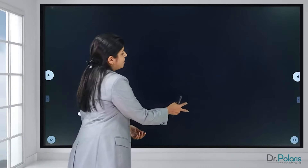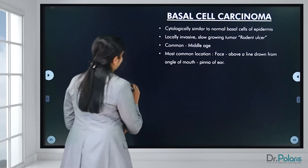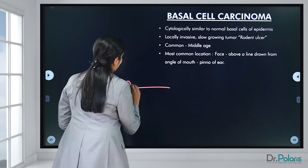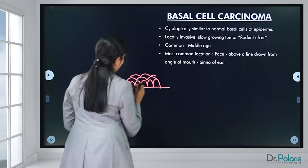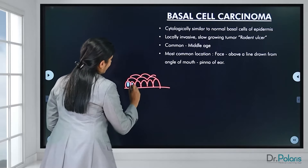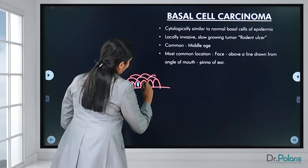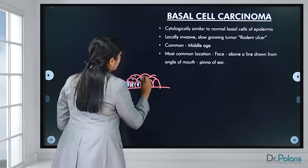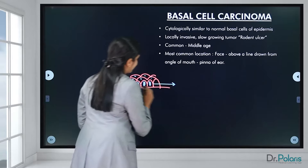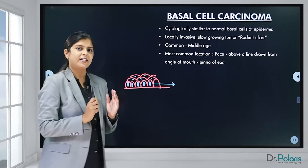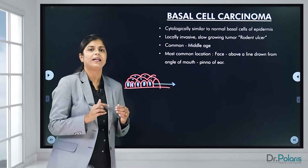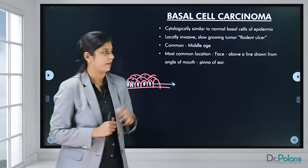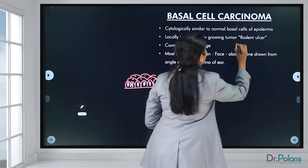Now let's talk about basal cell carcinomas. Cytologically these resemble the basal layer of the epidermis — the nuclei are more hyperchromatic, elongated, and denser compared to the superficial layer. It is a locally invasive, slow-growing tumor that burrows into underlying structures just like a rodent, which is why it is known as a rodent ulcer.